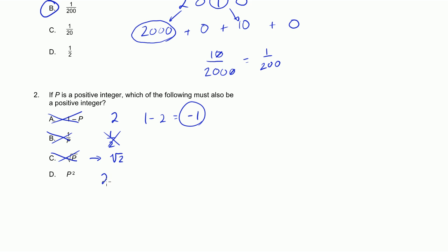And then finally, P squared. Well, for 2, if I say P is equal to 2, then P squared is equal to 4. And in general, if I take any positive integer and I square it, if I multiply it by itself, it's definitely going to be positive and it's definitely going to be an integer. So my choice is D.